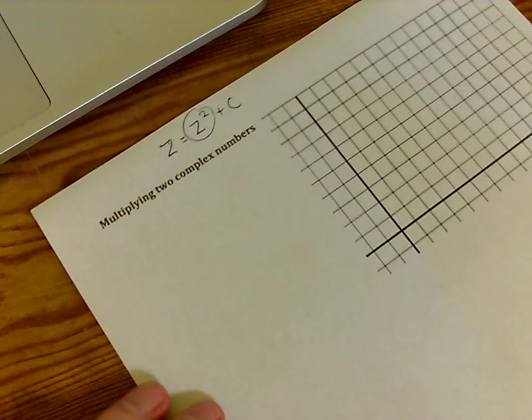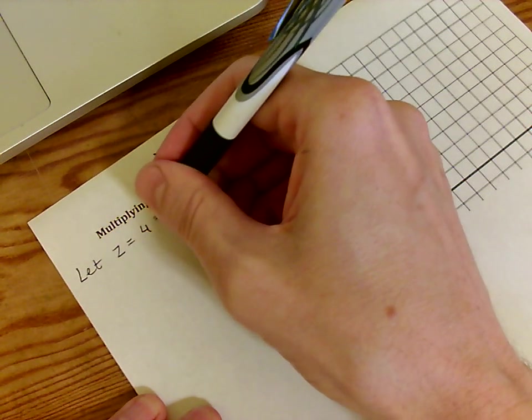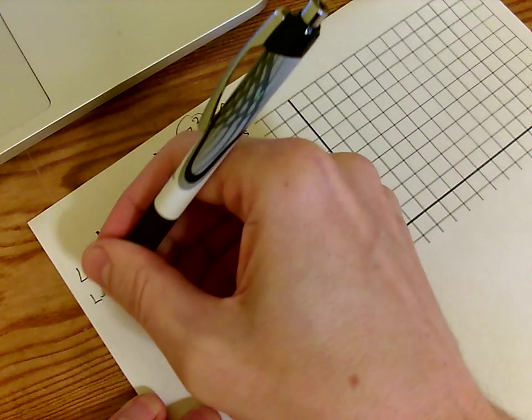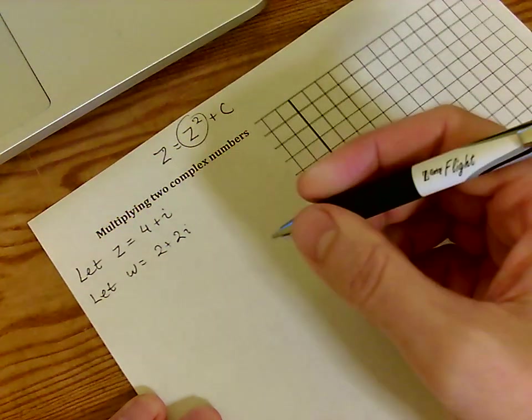So let's see an example. Let's let z equal the complex number 4 plus i. And let w equal the complex number 2 plus 2i. Let's compute z times w.